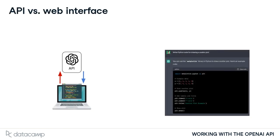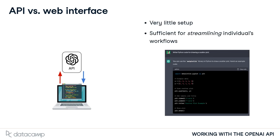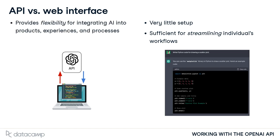Some of OpenAI's models, such as ChatGPT, can be used from the web browser. So what are the benefits of accessing them via the API? If we're looking to streamline our individual workflows using AI, then a low-setup web browser experience is likely sufficient for our purposes. However, if we're looking to begin integrating AI into our products, customer experiences, or business processes, we'll need the flexibility of working with the API using a programming language.